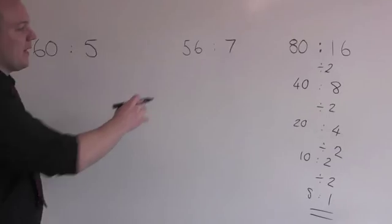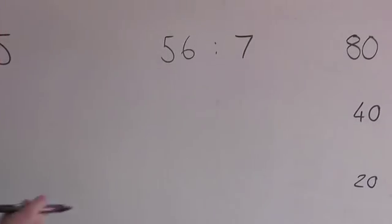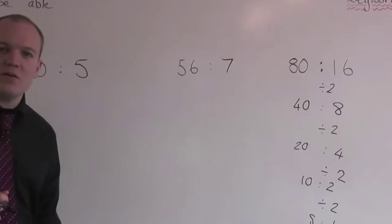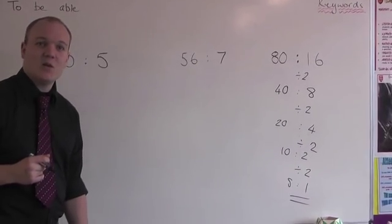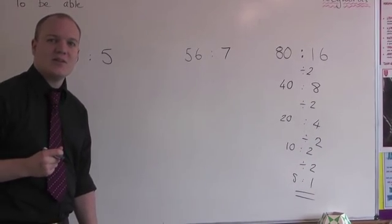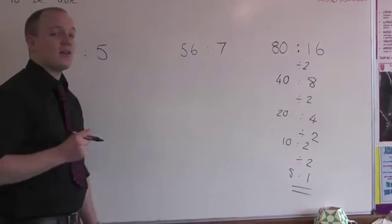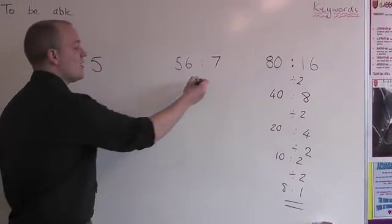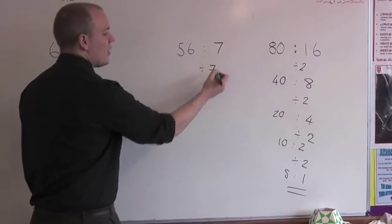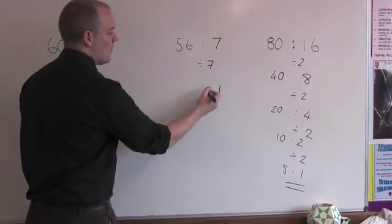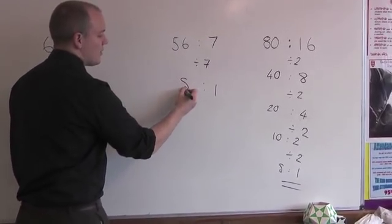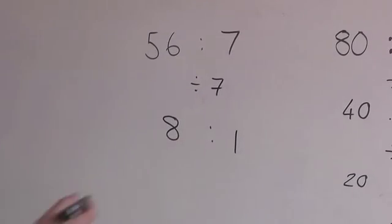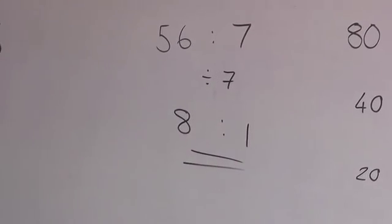Look at the next one: 56 to 7. I can't divide it by a small number, so I'm going to have to think — what number goes into 7 and 56? 7 times 8 is 56. So I'm going to divide them both by 7. There is one 7 in 7, and as Mr Middleton has just said, there are 8 sevens in 56. Simplest ratio? 8 to 1.